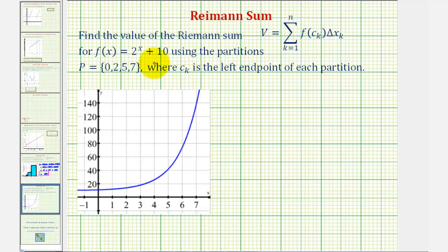Let's begin by setting up our partitions using 0, 2, 5, and 7. So here's x = 0, here's x = 2, here's x = 5, and here's x = 7. Notice how using these four values, we have three partitions.